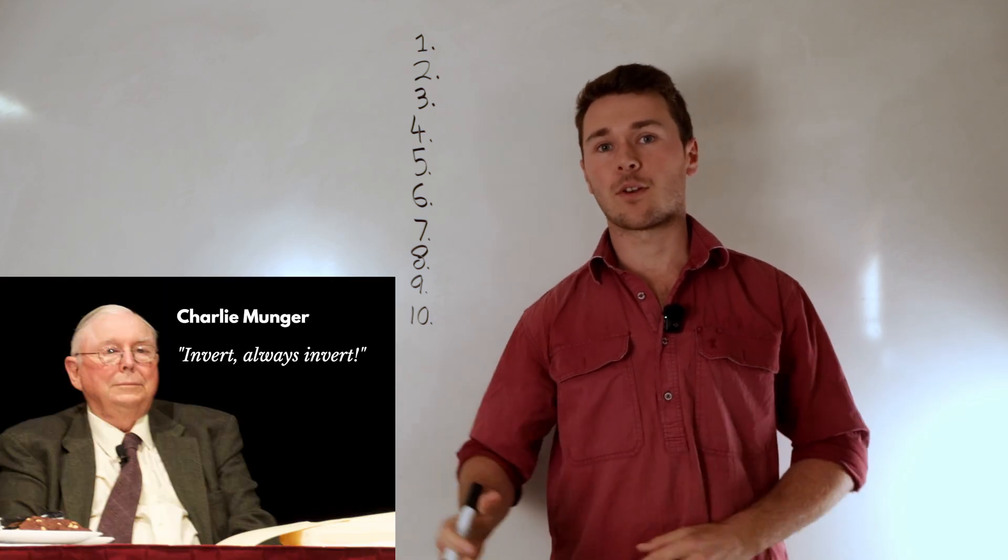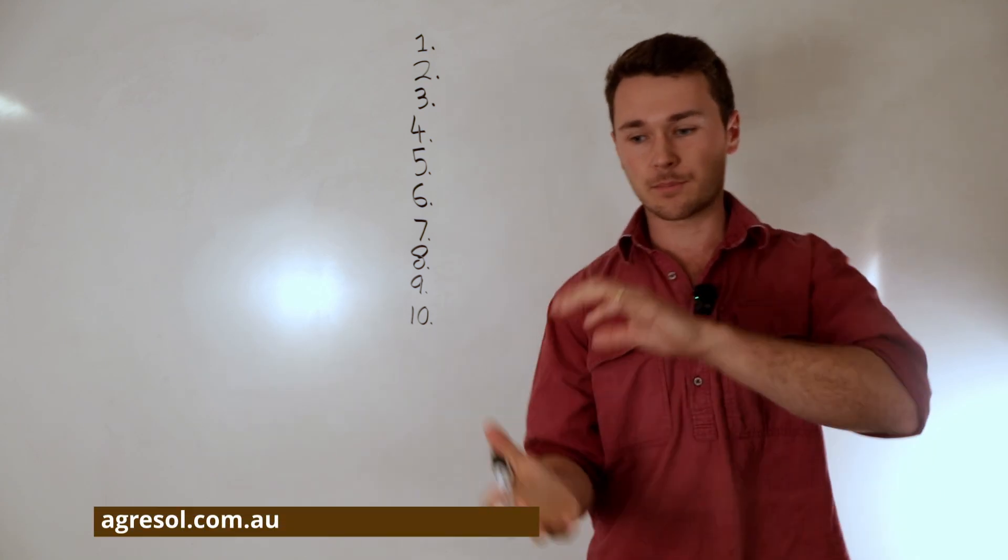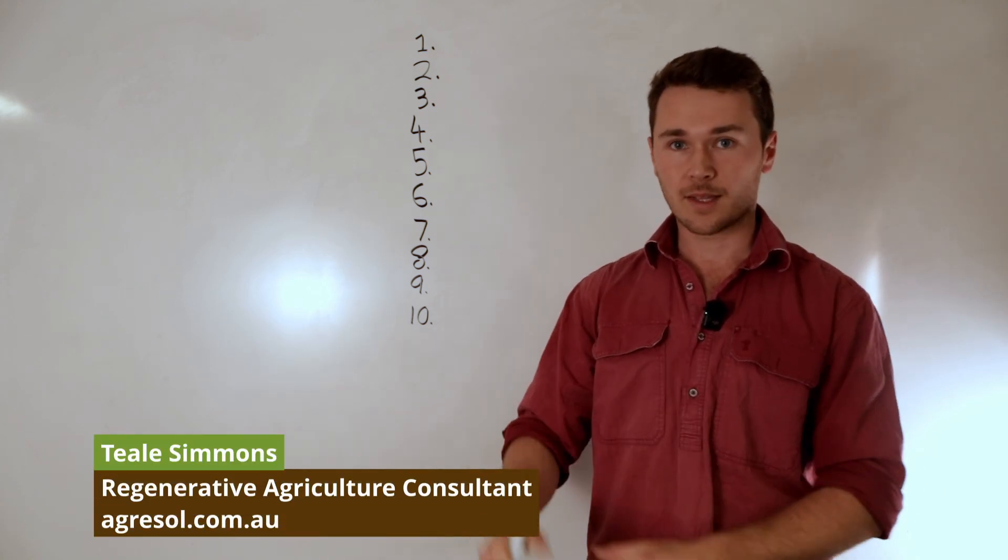Charlie Munger would often say invert, always invert, meaning rather than trying to actually solve the problem itself, let's flip the problem. How do we solve for that and stay away from that?